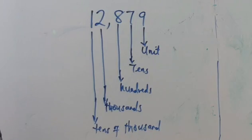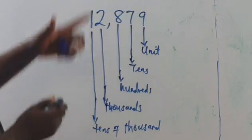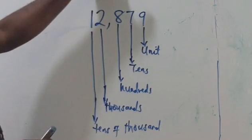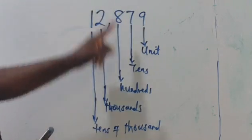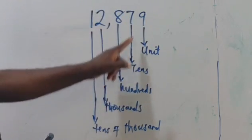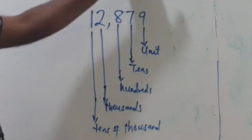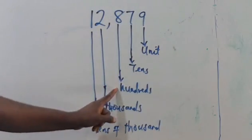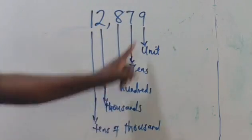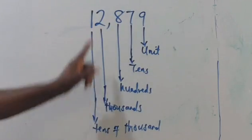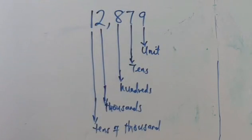Since each of the digits here has different values, it will be easier for us to be able to round to a particular place. So if you are rounding to the nearest tens, that means you're stopping at tens. If you are rounding to the nearest hundreds, you're stopping at hundreds. I hope that is clear.